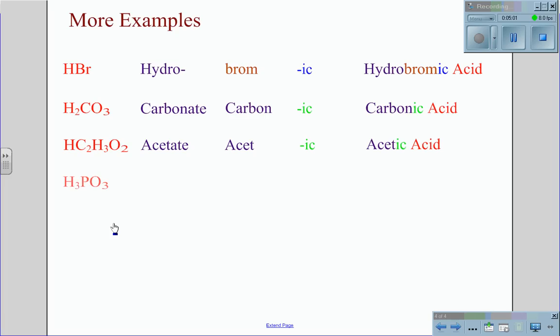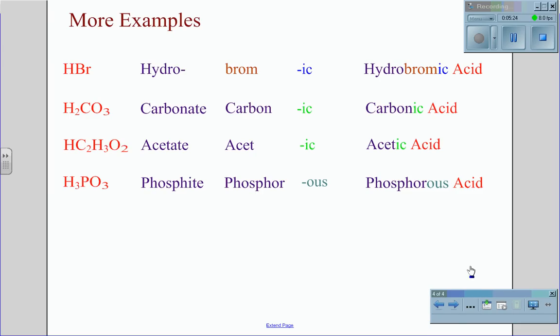One last example. H3PO3. Polyatomic ion is phosphite. We'll use the root phosphor. However, this time it's going to end in O-U-S because of the -ite ending on the polyatomic ion, giving us a name of phosphorous acid. This same pattern can be used for most acid nomenclature.